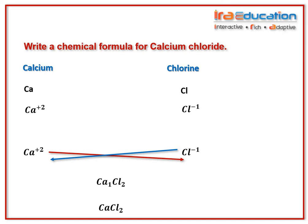Step 4: reduce the valency numbers to the simplest ratio if the values are divisible by a common factor. Valencies of 1 need not be written in the chemical formula.